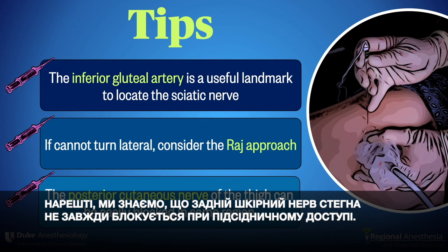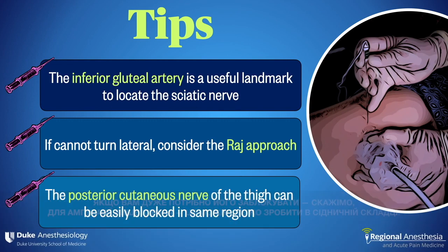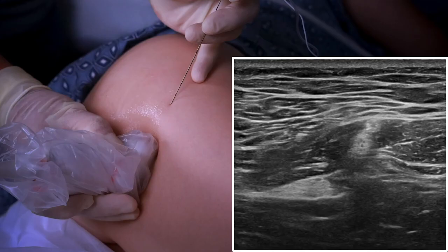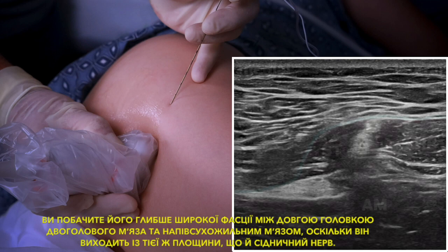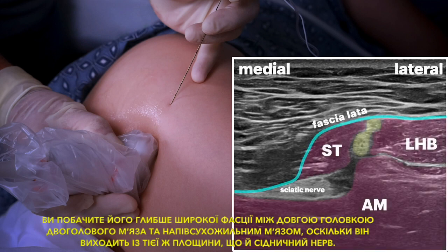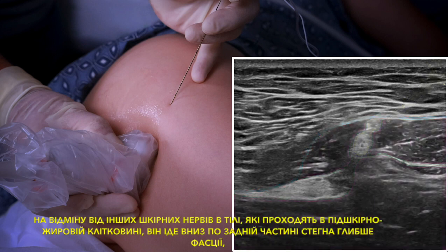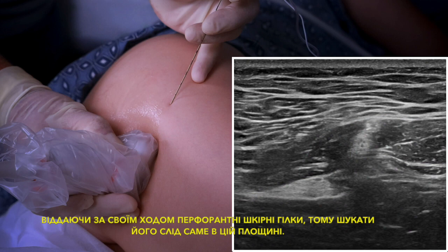Lastly, we know the posterior cutaneous nerve of the thigh is inconsistently blocked with the subgluteal approach. If you do need to get it — say for an above knee amputation — it can easily be blocked at the gluteal crease. You'll see it deep to the fascia lata between the long head of the biceps and the semitendinosus muscle, as it emerges from the same plane as the sciatic nerve. In contrast to other cutaneous nerves in the body that run in the sub-Q fat, it runs down the posterior thigh deep to the fascia, giving off perforating skin branches as it goes — so look for it in that plane.